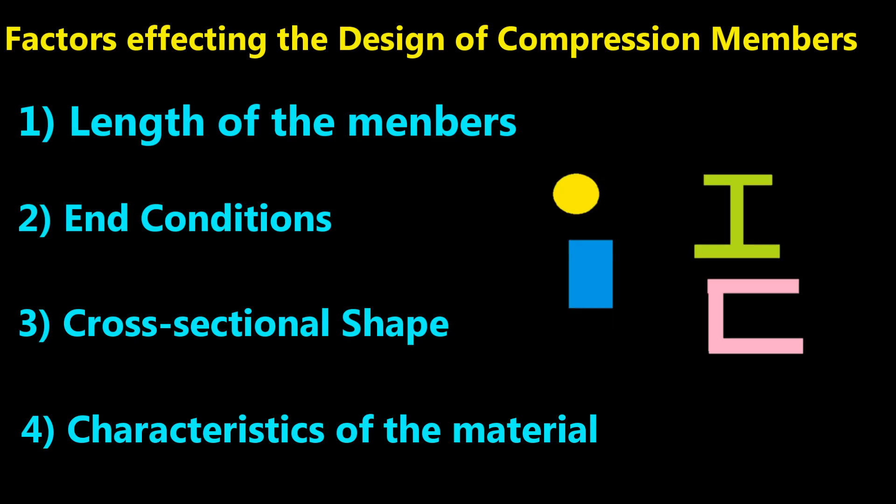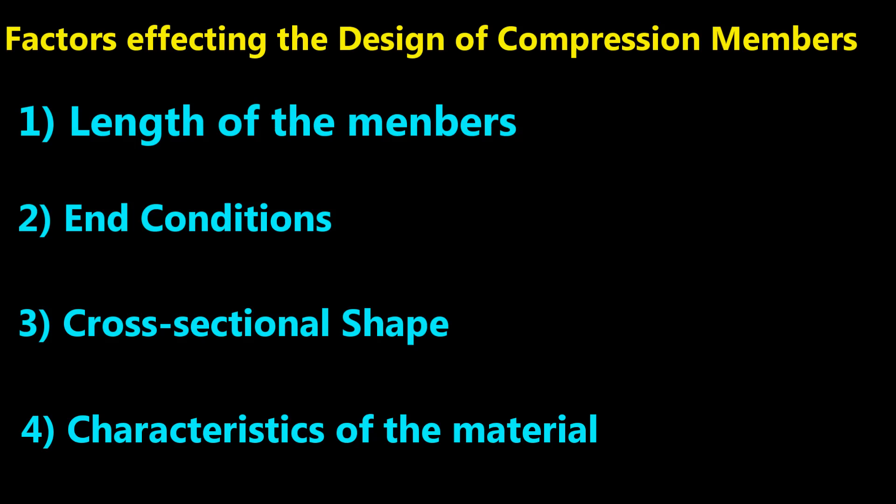Third one is cross sectional shape which is like rod or circular or flat or rectangular, I section or T section or built up section or channel section. The last one is the characteristics of the material.